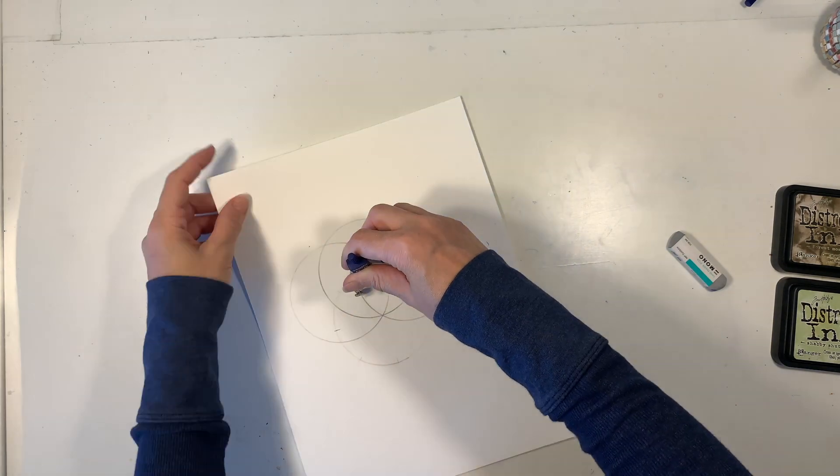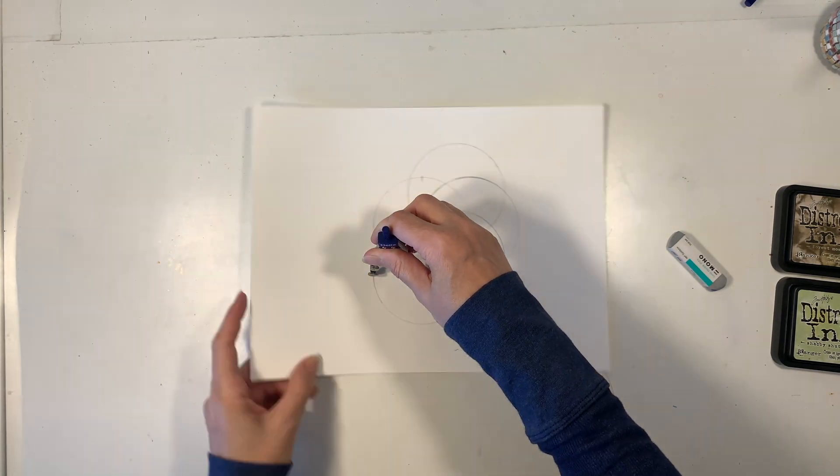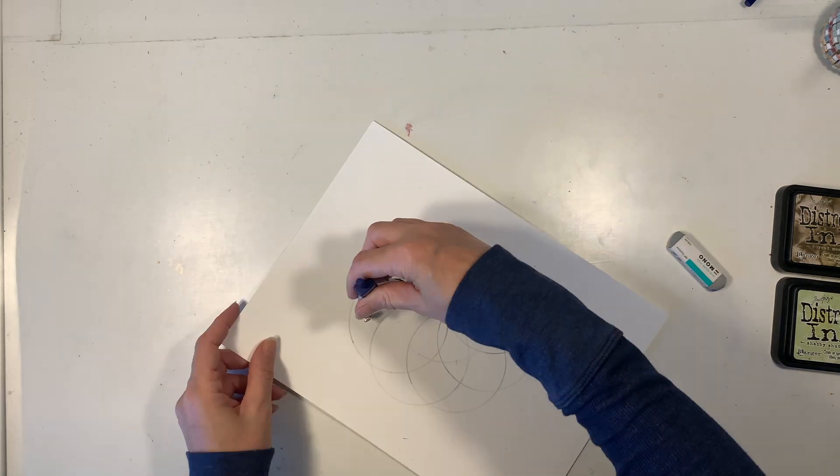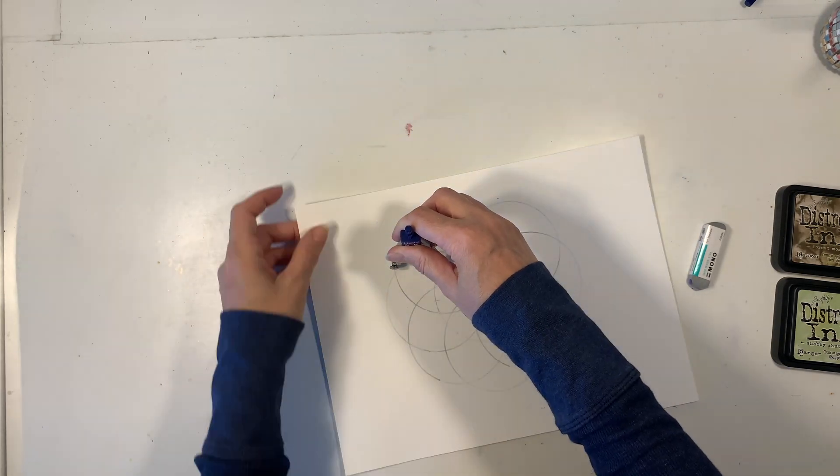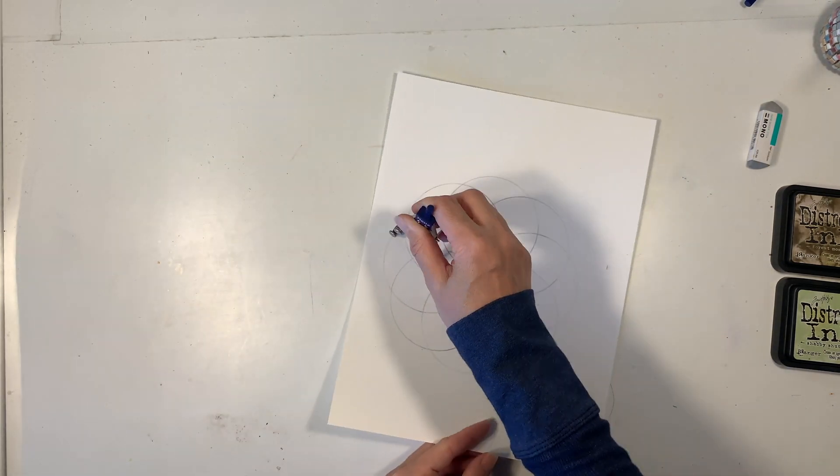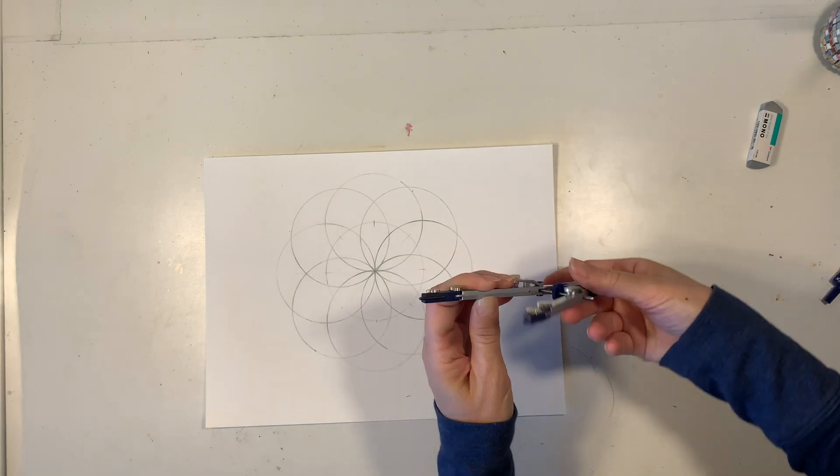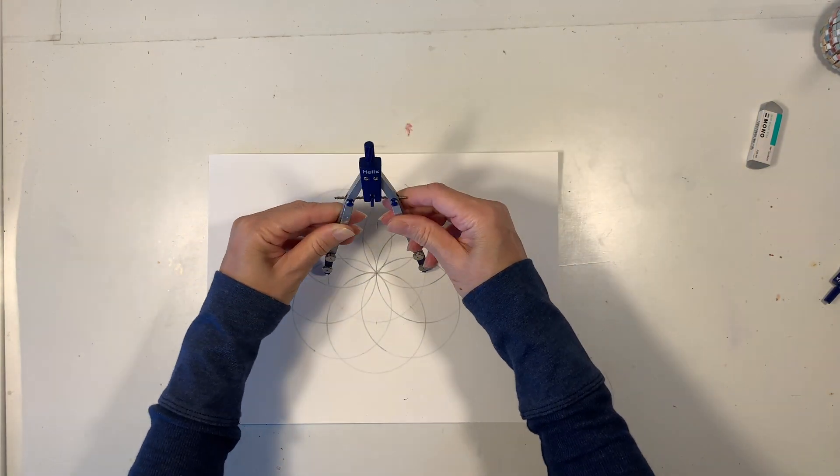Each circle should go through the center of your circle, and if it doesn't, do erase and readjust because those slight alterations will really distort your final image. I've counted them up just to be sure, and I do have those 8 circles.